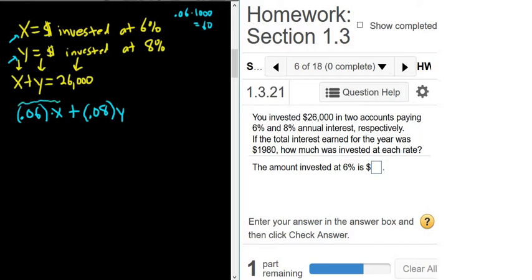Plus the money earned from this account. So that will be 8% of the money invested in that account. So the money coming from the account at 6% plus the money coming from the account at 8% equals the total money earned, which is $1,980.